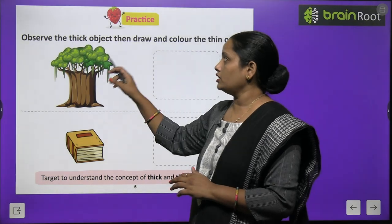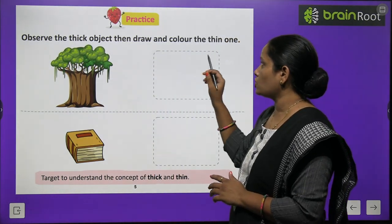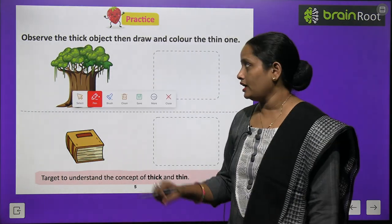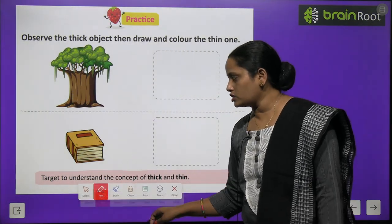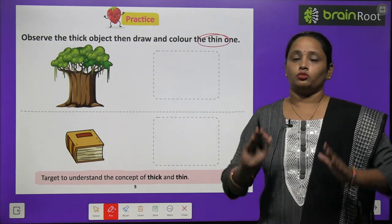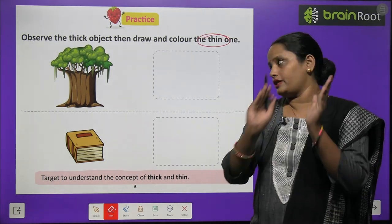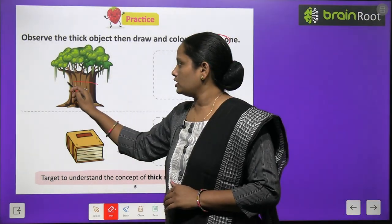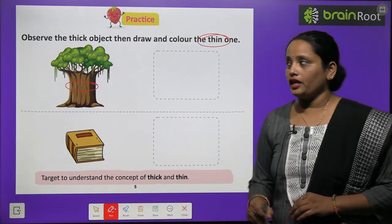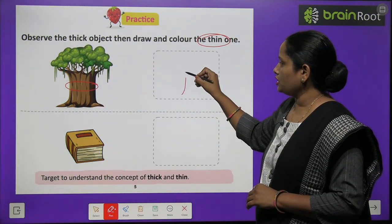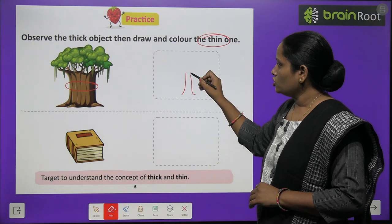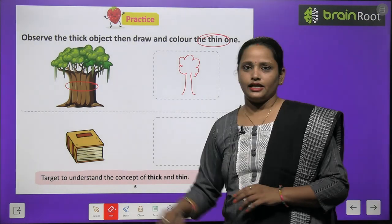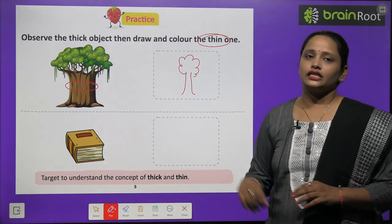Now let's observe the thick object, then draw and color the thin one. Toh yahaan pe ek thick object bana hai, usse dekhna hai aur uske jaisa hi thin banana hai. Toh mota diya gaya hai, patla banana hai. Yahaan pe ek tree hai, dekho kitni moti hai. Aur aise hi abhi ek aur tree banana hai jo honi chahiye patla. So let's draw the tree — this is thin.